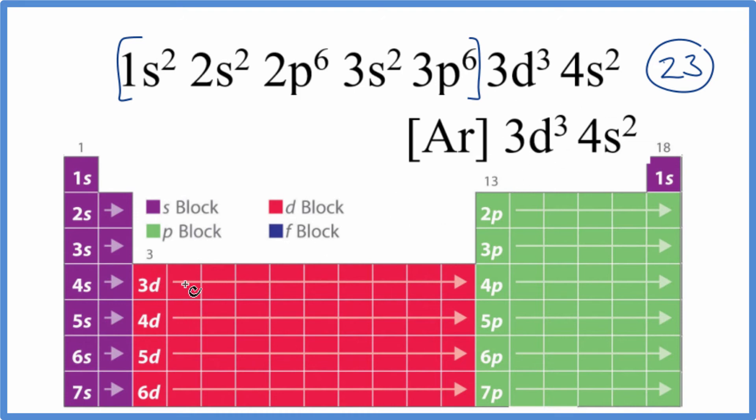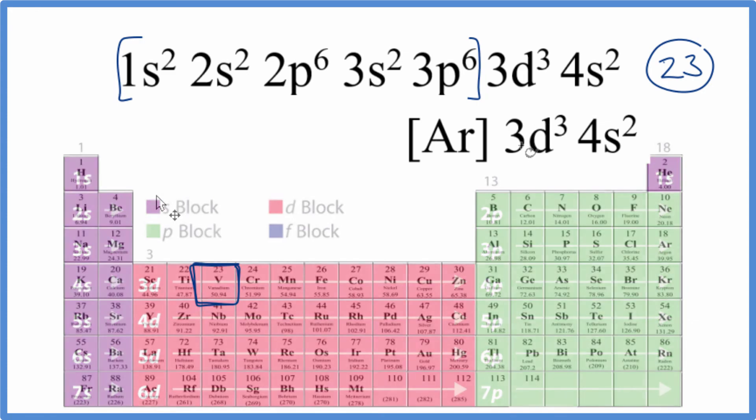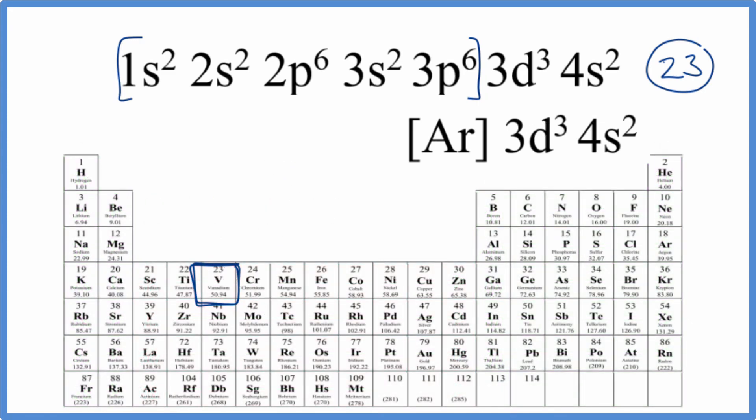So we go 1, 2, 3 right here. That's going to be the element that is represented by this electron configuration. That's going to look like this. It's vanadium, just like we found before.